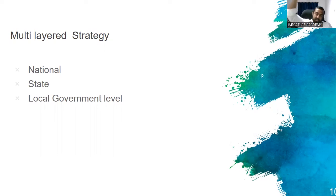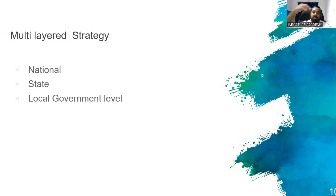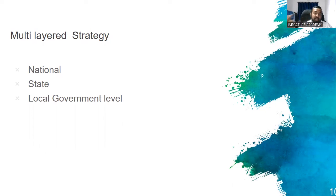For example, Naxals have been getting support from other countries — a state government cannot deal with that directly, only the Centre can. Conversely, a minister at the Centre cannot verify whether all Naxal-affected areas are receiving proper benefits — only the local District Collector can do that effectively. This is what is meant by a multi-layered strategy. You can also involve NGOs and civil society members and emphasize the role they can play.